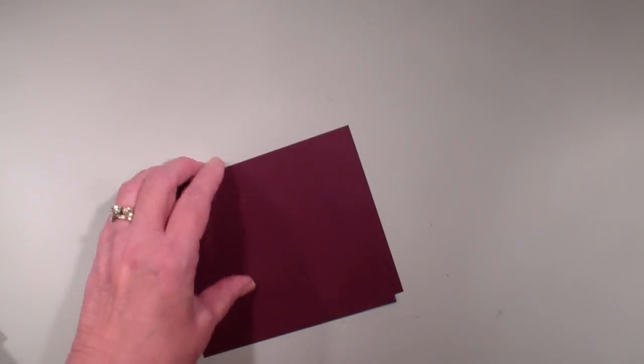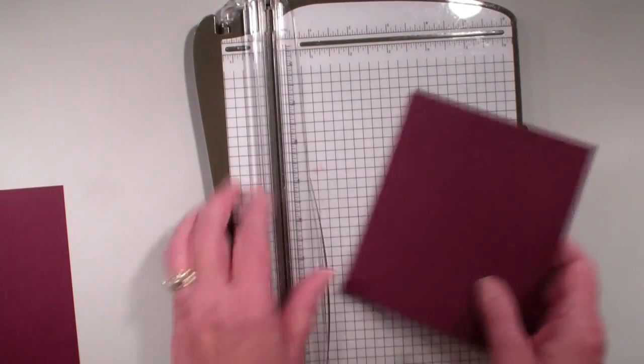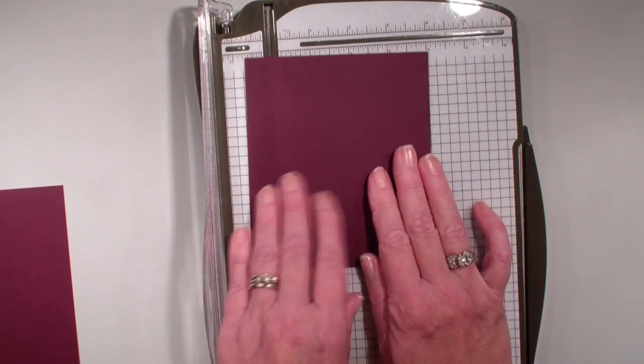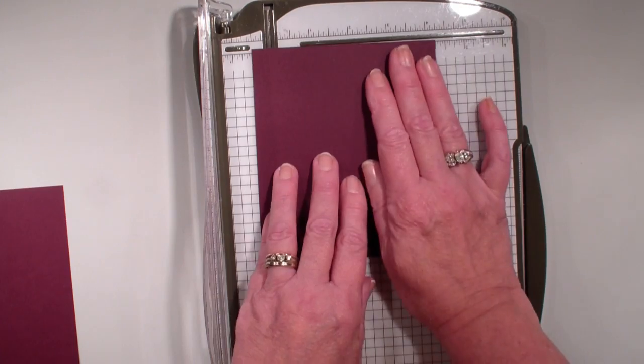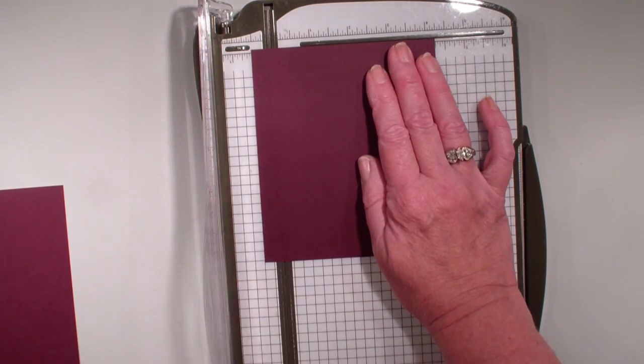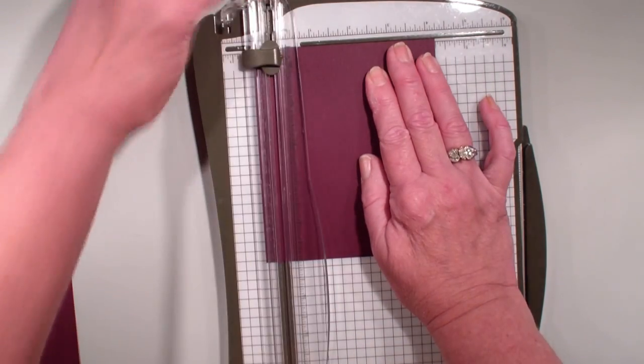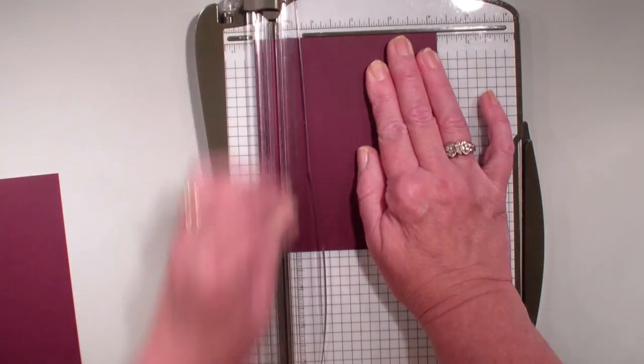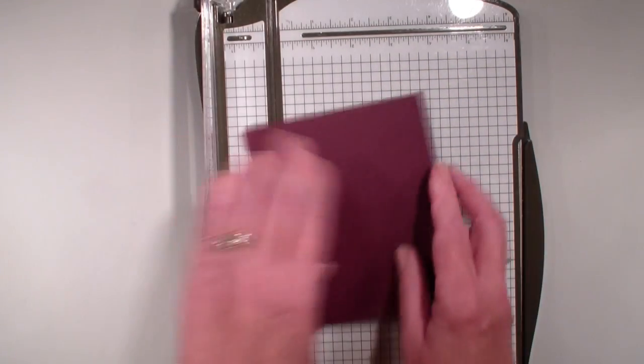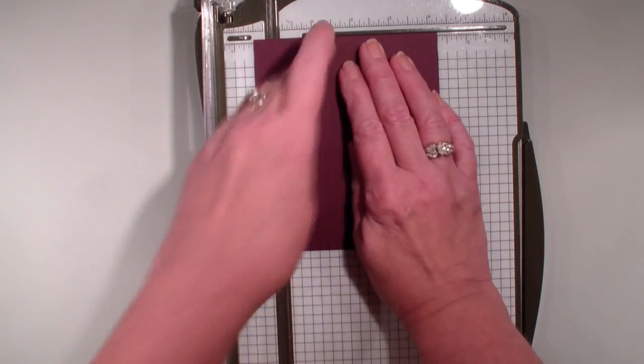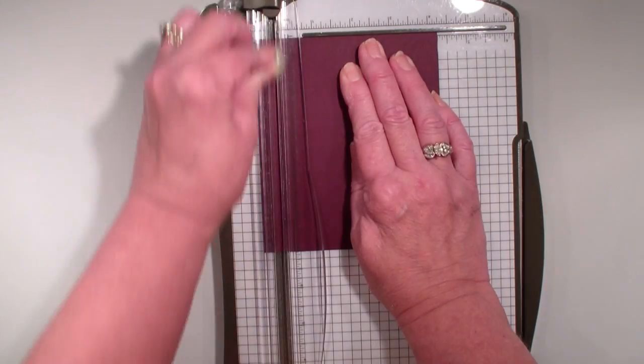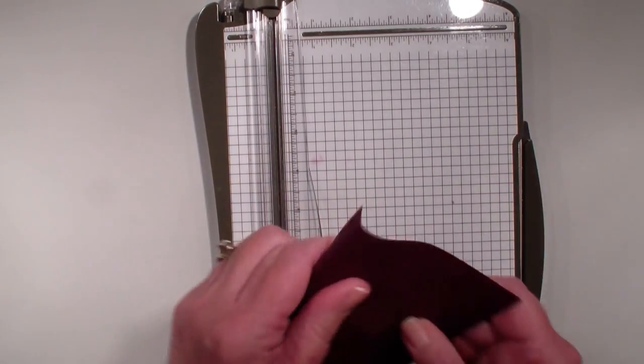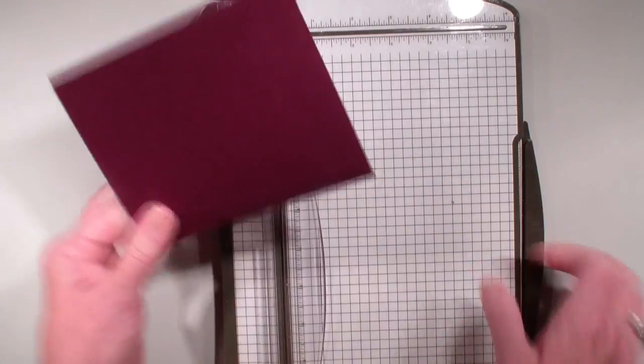I've got my Blackberry Bliss cardstock. I will tell you this measures 4 3/4 by 5 1/2. I have two pieces. So I've brought in my trimmer, and I need to score at a half inch on both pieces of paper. And that is what is going to form the inside of my card, like so.